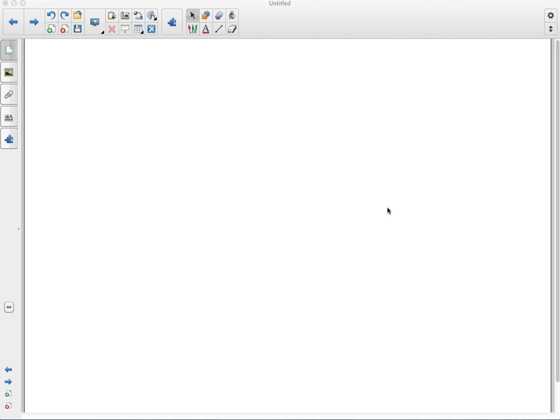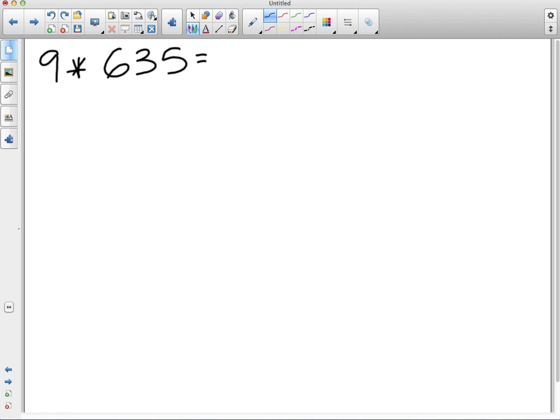All right, let's begin with a multiplication problem: 9 times 635. Last week and in the beginning of this week, we used the strategy of partitioning rectangles. Can somebody volunteer to help lead us through this strategy?